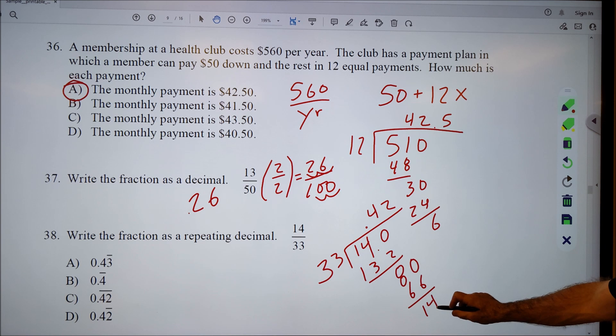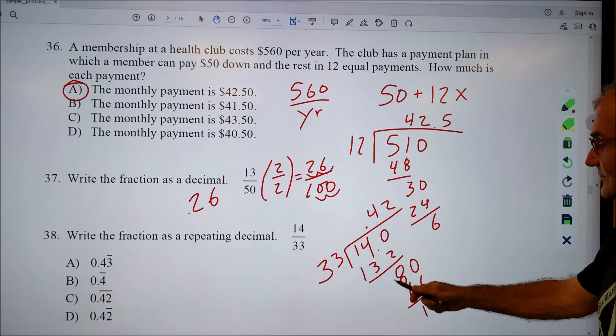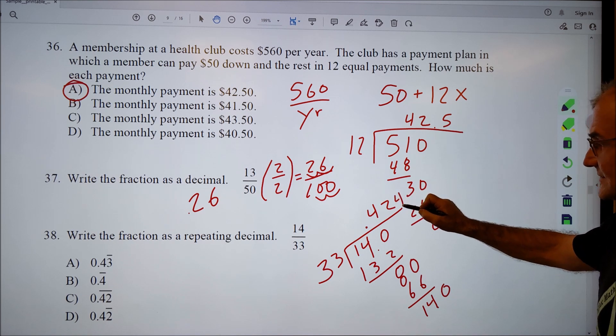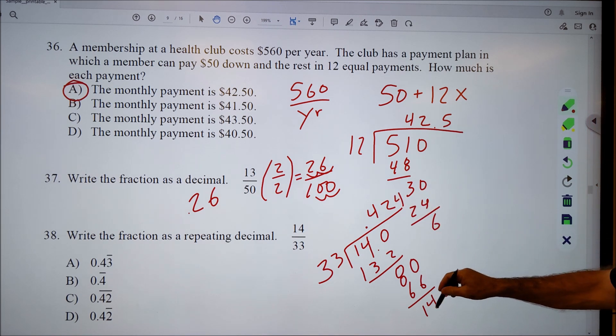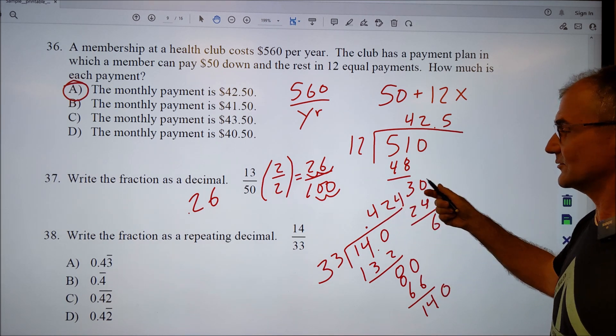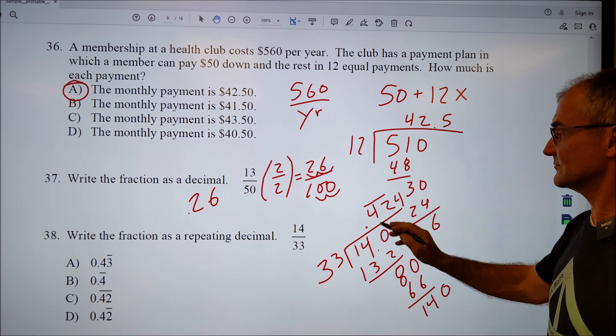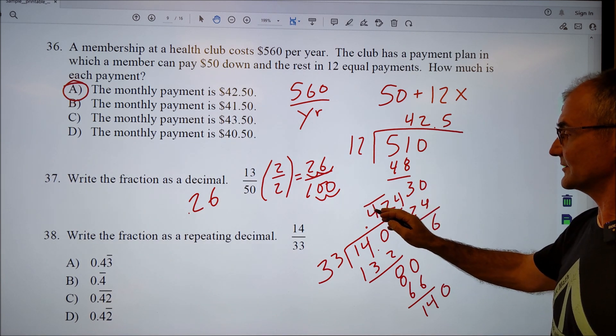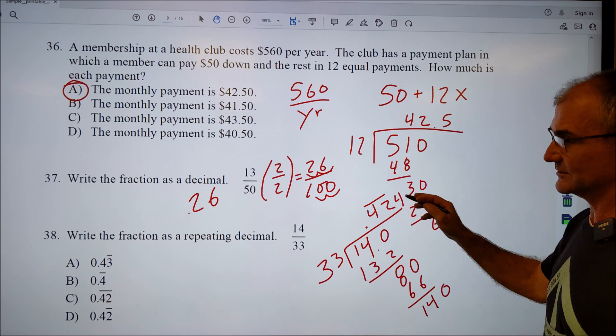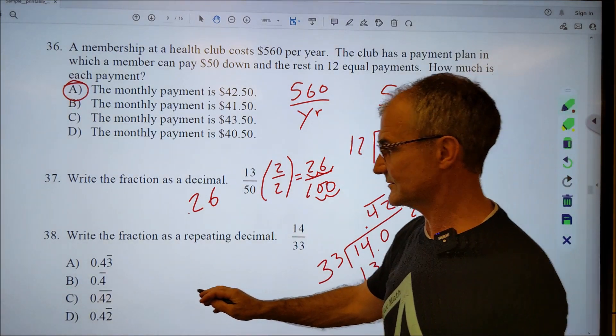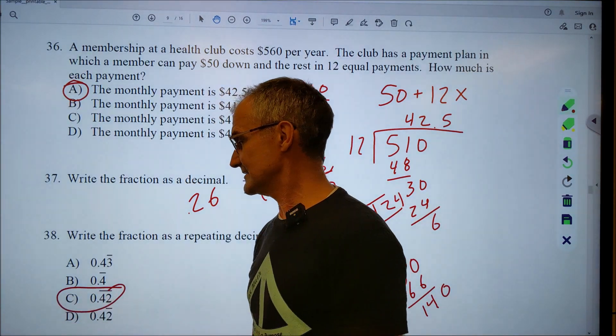So I can see I'm starting to repeat again. It doesn't go in a fourteen, so I bring down the zero. I have a one forty. It's going to go in there four times. I can see there's a pattern forming, so it's going to be four-two, four-two, where the four-two repeats itself. So that bar means point four-two, point four-two afterwards. So here's the correct answer for thirty-eight, answer C.